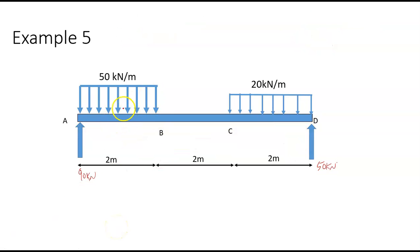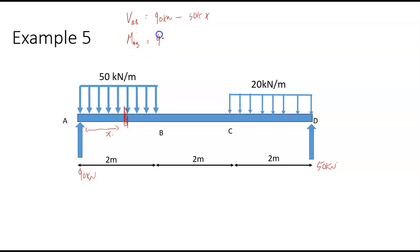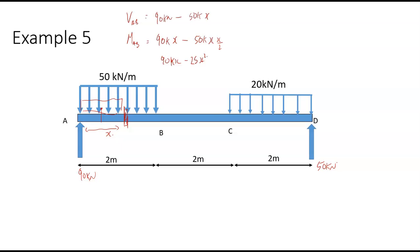If I take a segment between A and B, the shear force between A and B is going to be equal to 90 kilonewtons minus 50 kilonewtons times x, whatever that value of x is. And the bending moment from A to B is going to be 90x minus 50x times x over 2, which gives 90x minus 25x squared.